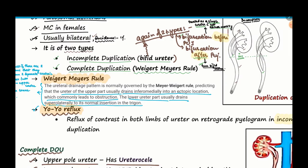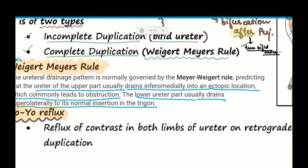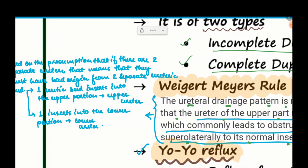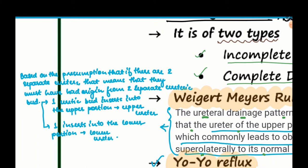Now we come to the Weigert-Meyer rule. Ureteral drainage pattern is normally governed by this rule, predicting that the ureter of the upper part usually drains inferomedially into an ectopic location, which commonly leads to obstruction. The lower ureter usually drains superolaterally to its normal insertion in the trigone. To illustrate: one ureter drains the upper pole and one drains the inferior pole of the kidney.